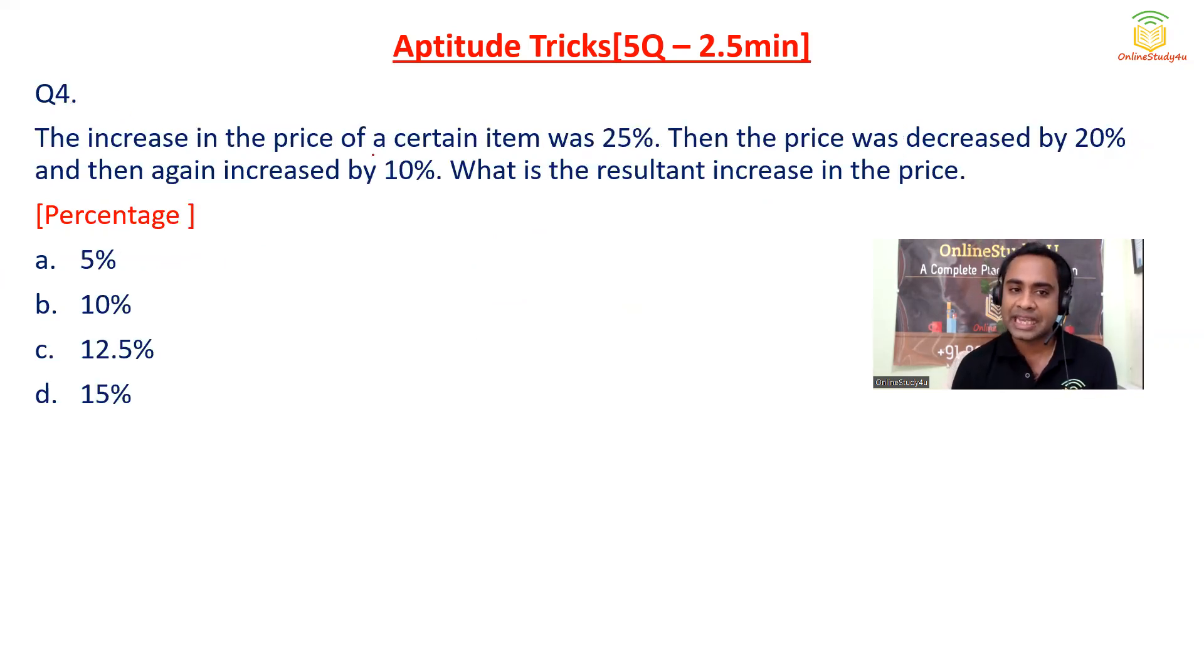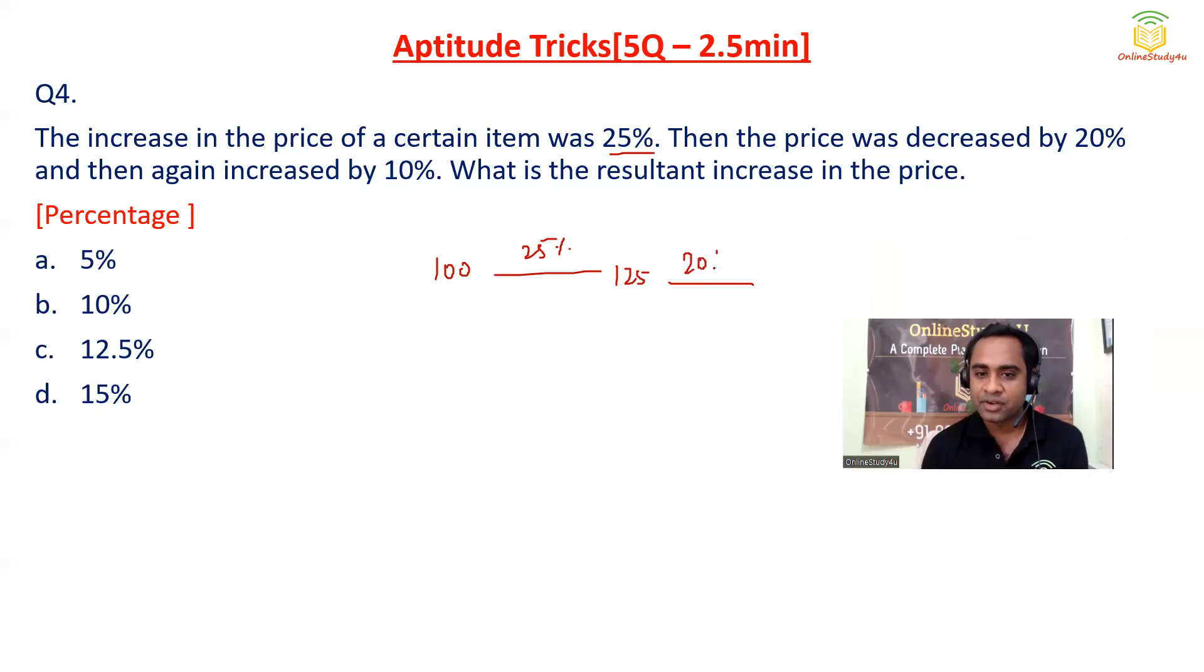This is a percentage question. The increase in the price of a certain item was 25%, so it is an increment of 25%, means 125. And then the price was decreased by 20%, so decrement 20%, so 125, 20% will be 25, it will become 100. And then again it is increased by 10%, so 10% of 100 will be 10, that means 110. So what is the overall profit? Overall profit will be 10%. Option B will become the correct answer.